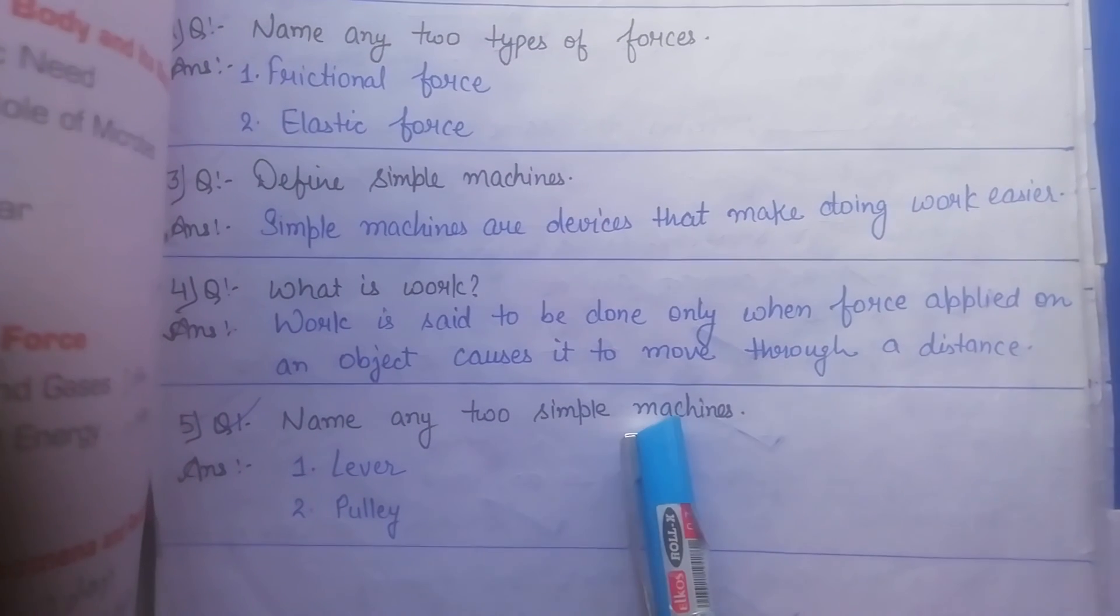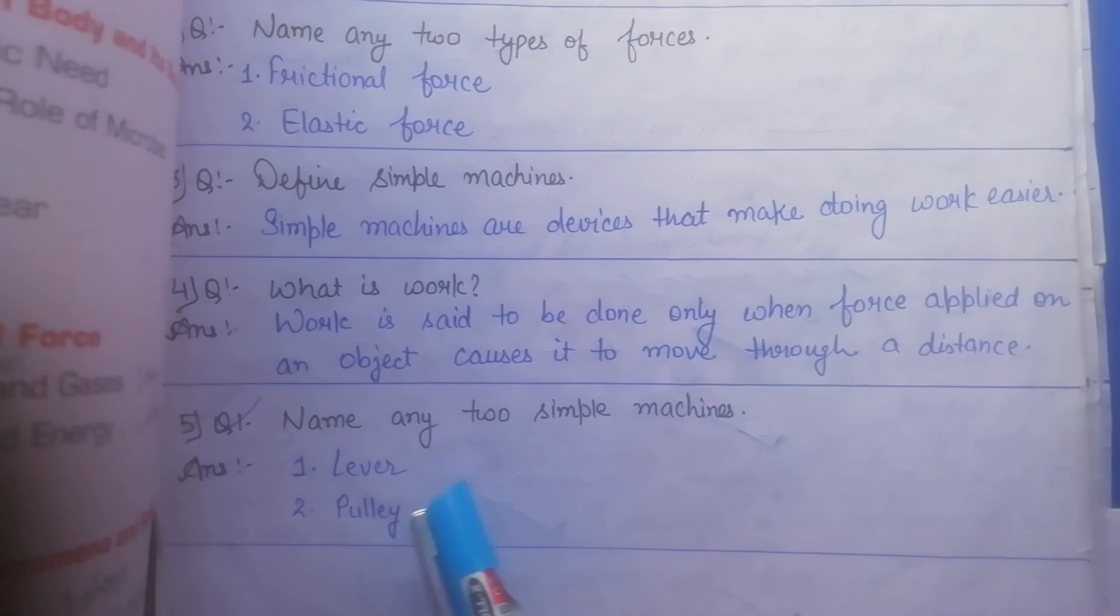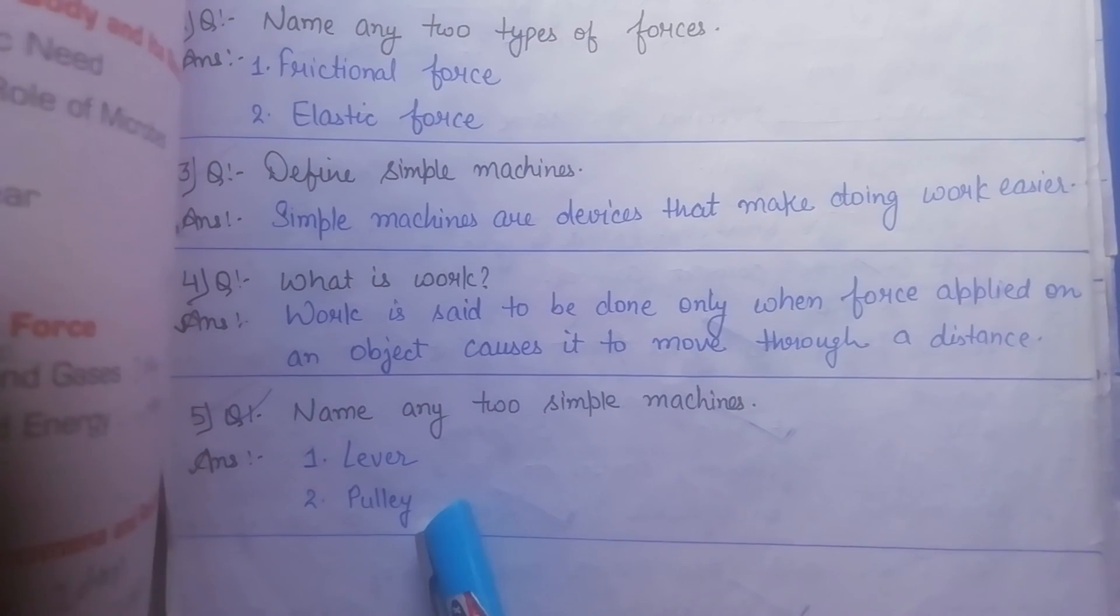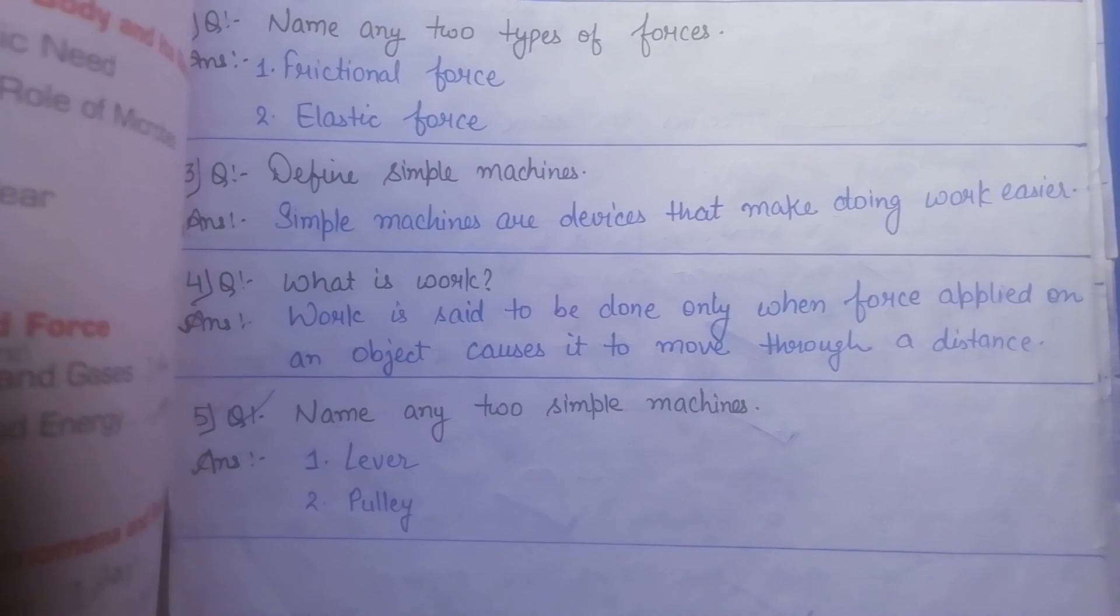Now name any two simple machines. We can say the name of two simple machines. Here we have written lever and pulley. If you remember any other way, you can write this. So all the best dear students.